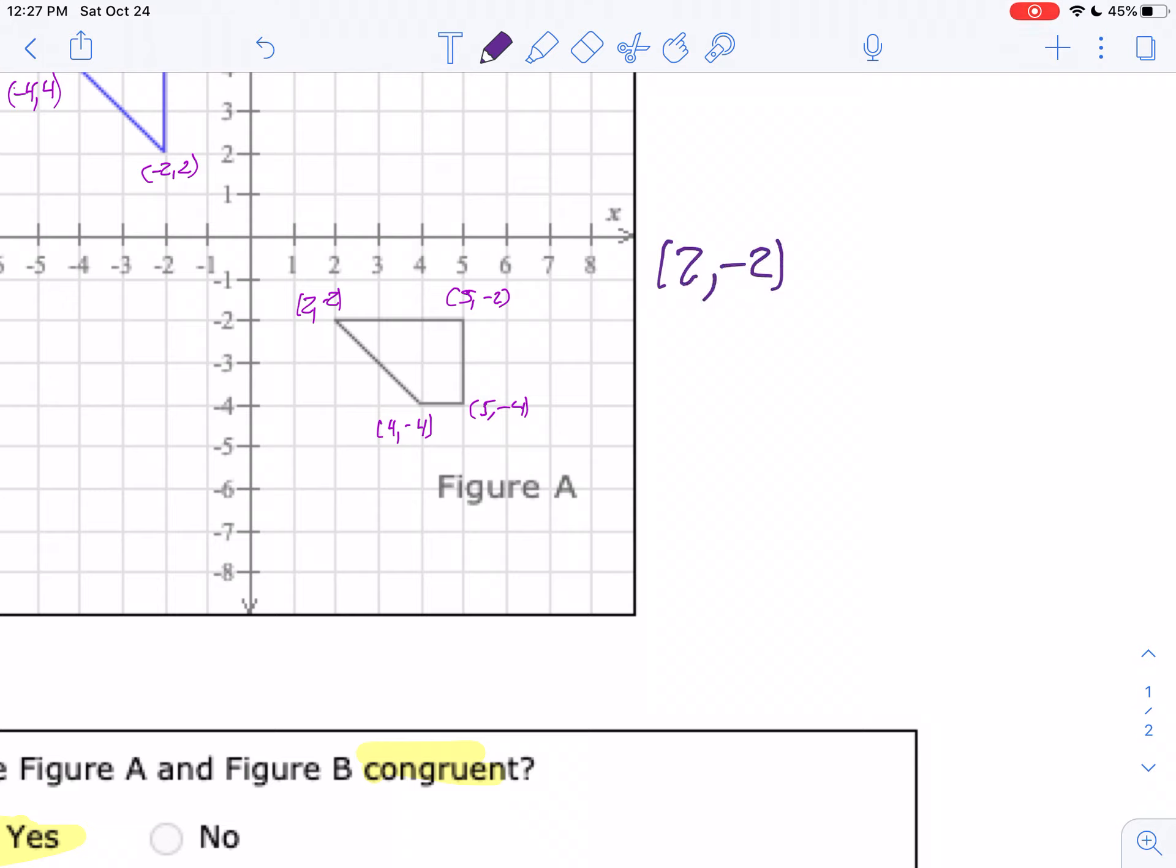When you do a rotation, that becomes negative 2, negative 2. And then if we do a reflection over the x-axis, it becomes negative 2, 2. And notice that point is right there.